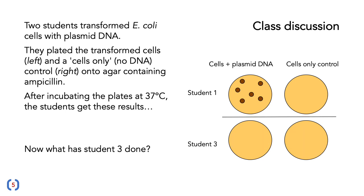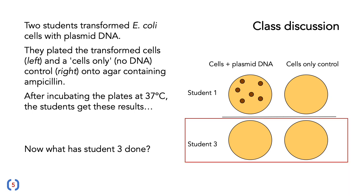Here's another example — student three. They've done the same experiment, but what has student three done wrong? Student three has got no colonies on their plate. Again, there could be a number of reasons: they may have plated cells-only control on both plates, put so much ampicillin in that it killed all cells including those with the resistance gene, or plated no cells onto the plates at all. This again emphasizes the importance of having both positive controls and negative controls.